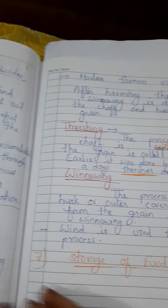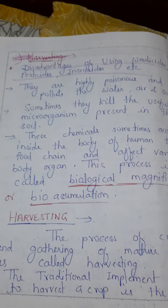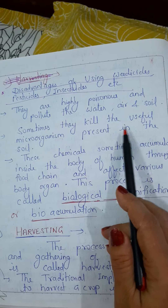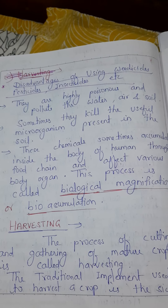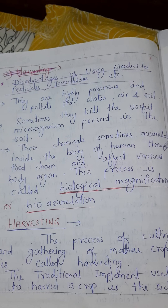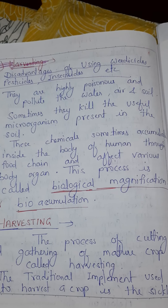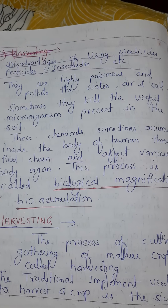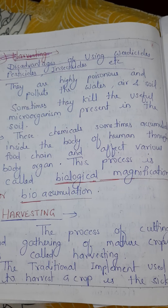Now the next topic is the disadvantages of using weedicides, pesticides, and insecticides. They are highly poisonous and pollute water, air, and soil. Sometimes they kill useful microorganisms present in the soil. If these chemicals are used in excess, they are easily soluble and due to water runoff they reach water bodies and affect aquatic organisms, pollute water, and contaminate air and soil. They may also kill useful microorganisms that help in the decomposition process in the soil.